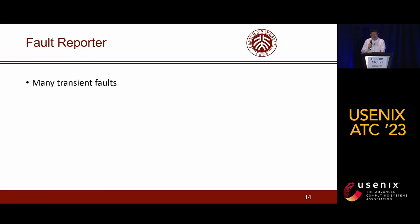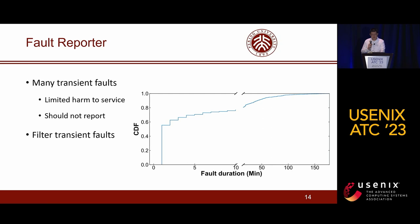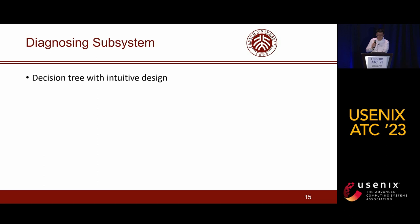However, not all faults are worth reporting. We have observed that there are many transient faults that occur in the internet. These faults disappear quickly and have limited impact on our cloud service. Therefore, we aim to filter out transient faults. By analyzing the distribution of fault duration, we found that approximately two-thirds of faults last for less than three minutes. Based on this observation, the fault reporter only reports a victim AS if the fault lasts for three minutes or longer. We believe this setting efficiently filters out transient faults without significantly sacrificing timeliness.